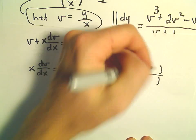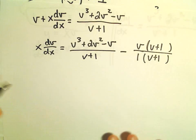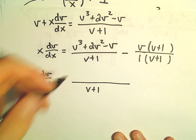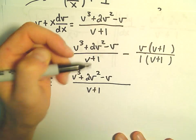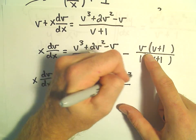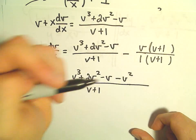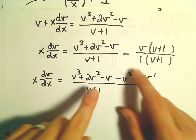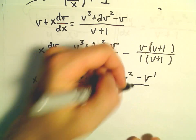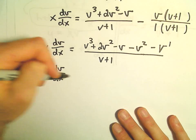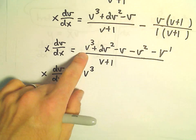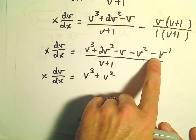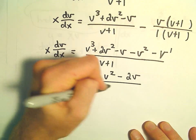Multiplying numerator and denominator by v + 1 to get common denominators, x·(dv/dx) equals (v³ + 2v² - v - v² - v)/(v + 1). Combining like terms: 2v² - v² gives v², and -v - v gives -2v. So x·(dv/dx) = (v³ + v² - 2v)/(v + 1).